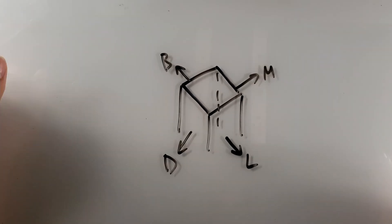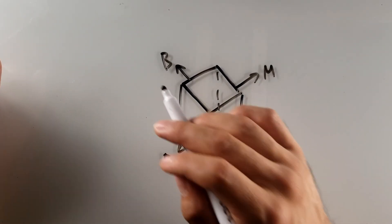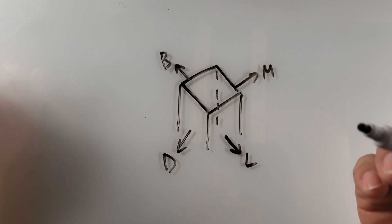Now let's add some directional terms. So we have mesial, we have distal, we have lingual, we have buccal. Because I'm using buccal, this is a posterior tooth.